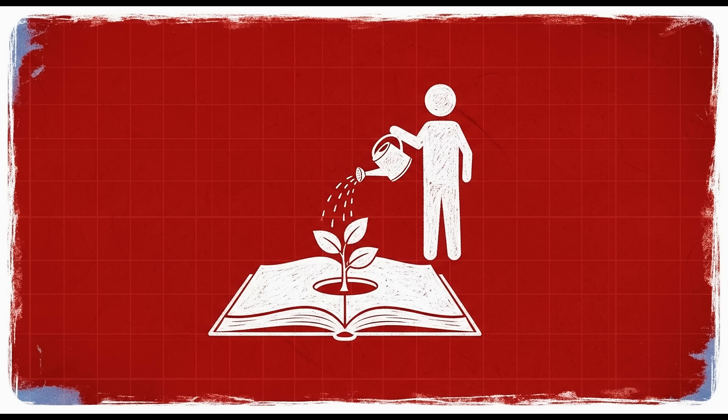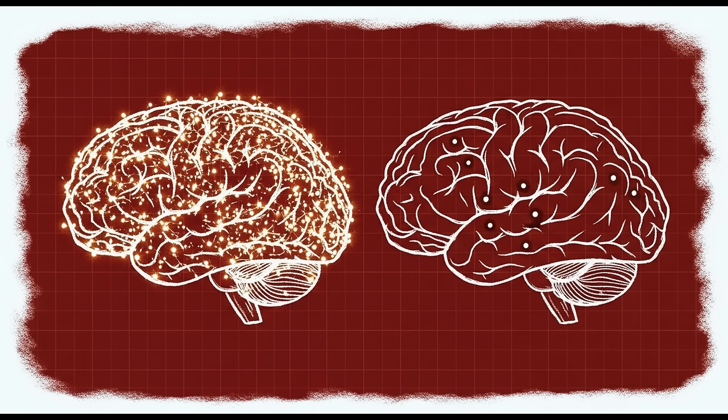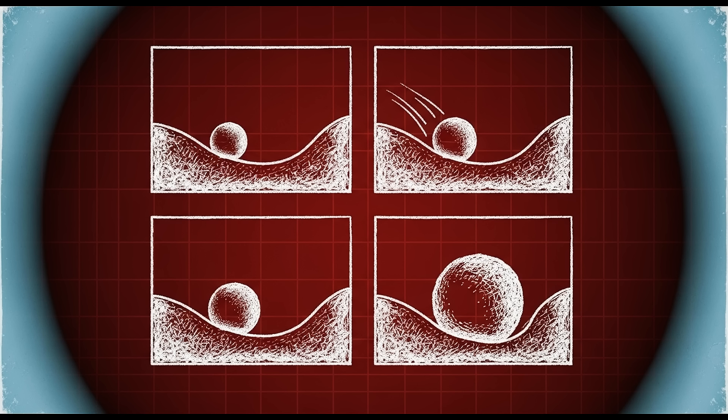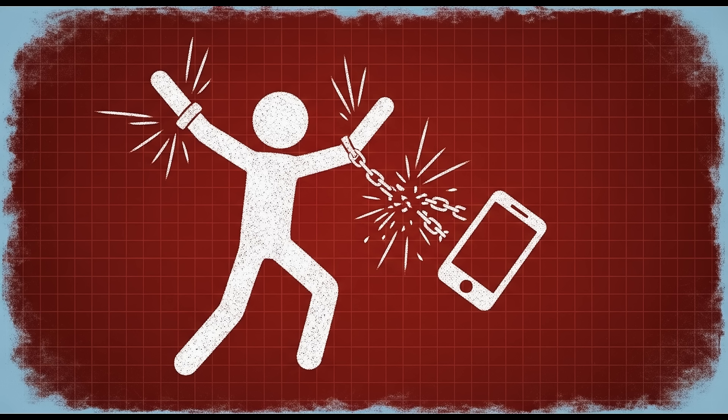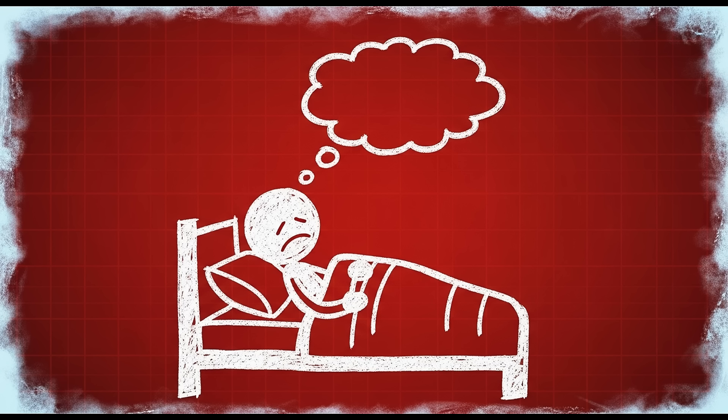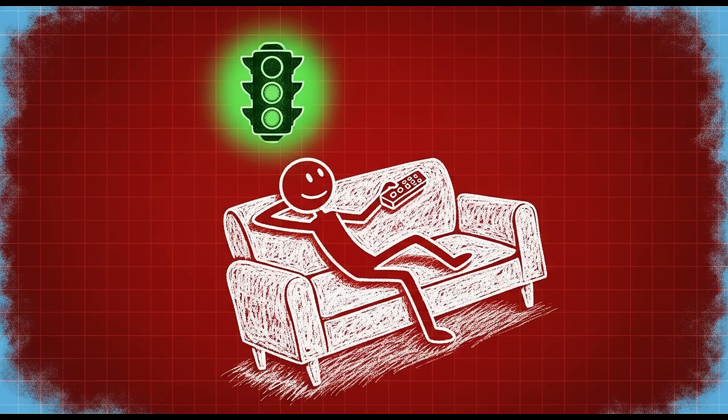But you can't just remove things, you have to replace them. Nature abhors a vacuum and so does your brain. When you take away easy dopamine sources, you need to deliberately engage in activities that provide slower, more sustainable rewards. Read a physical book instead of scrolling. Cook a meal instead of ordering. Go for a walk without headphones instead of watching another video. Exercise without music or podcasts. Journal by hand. Have a real conversation.